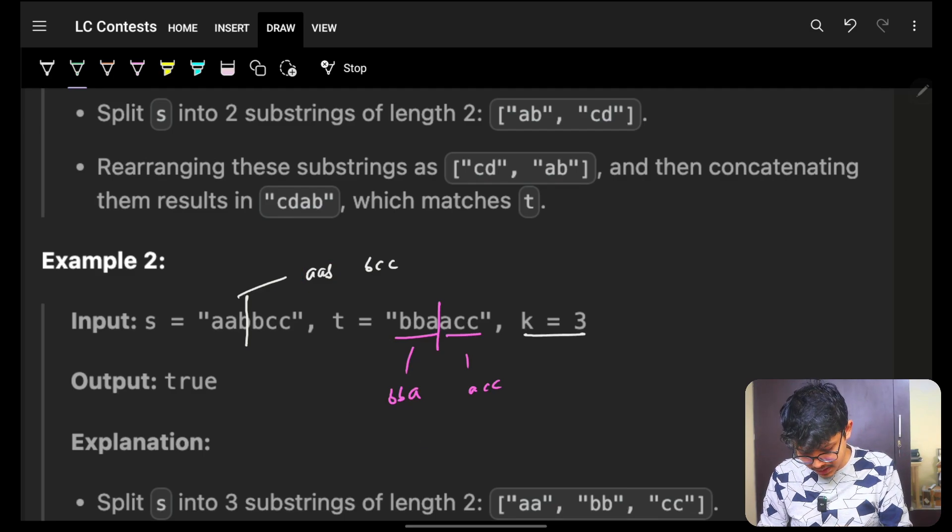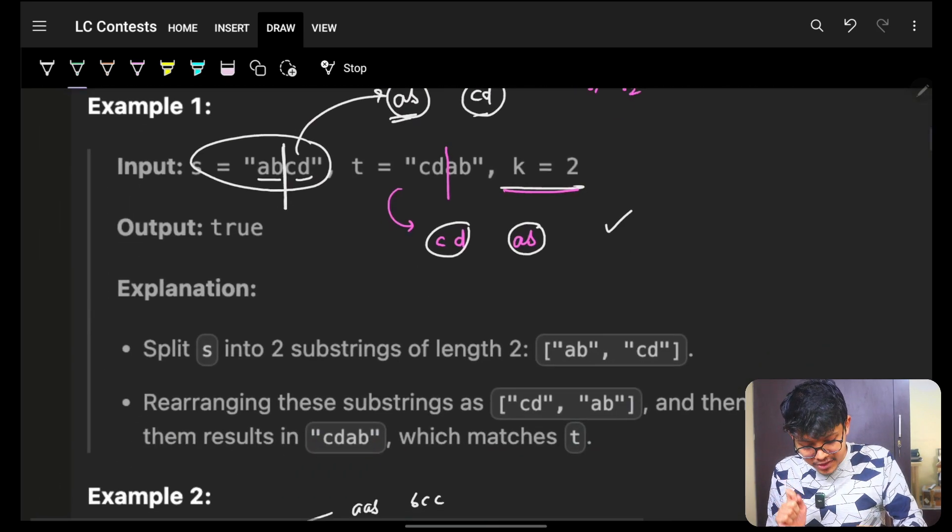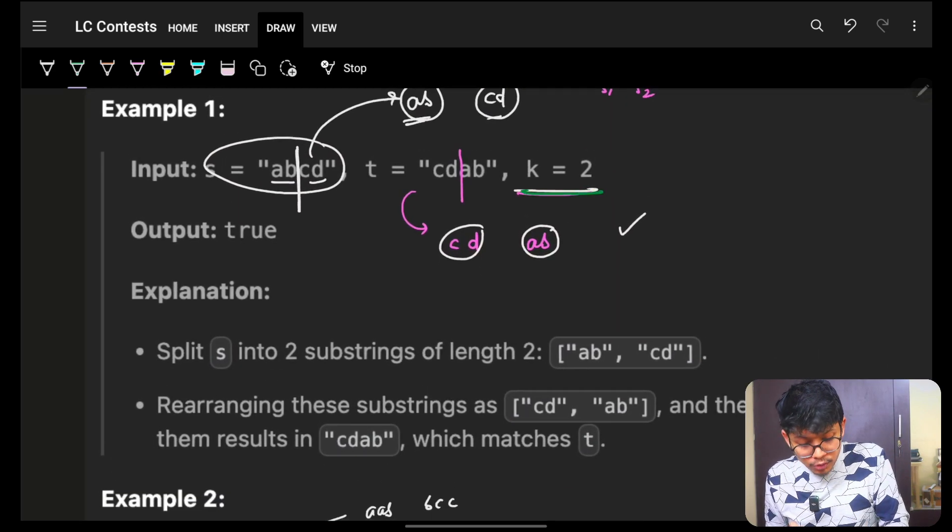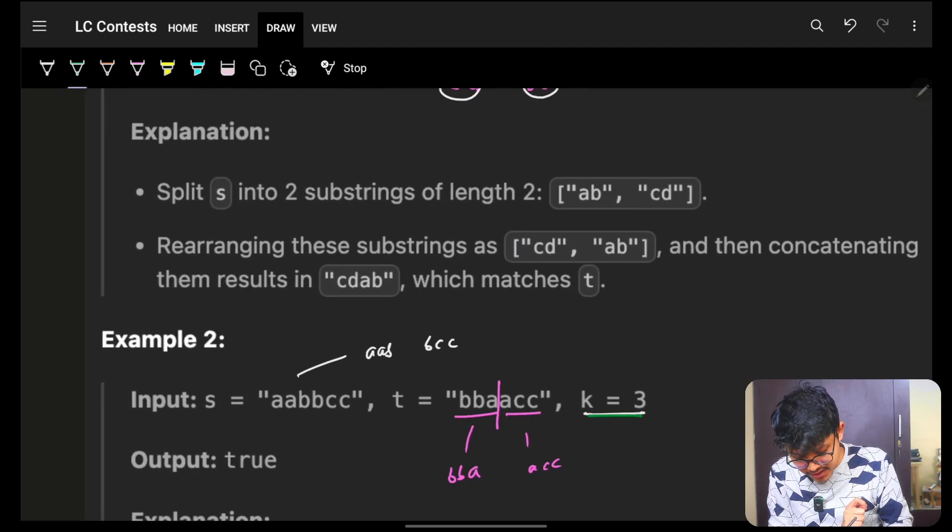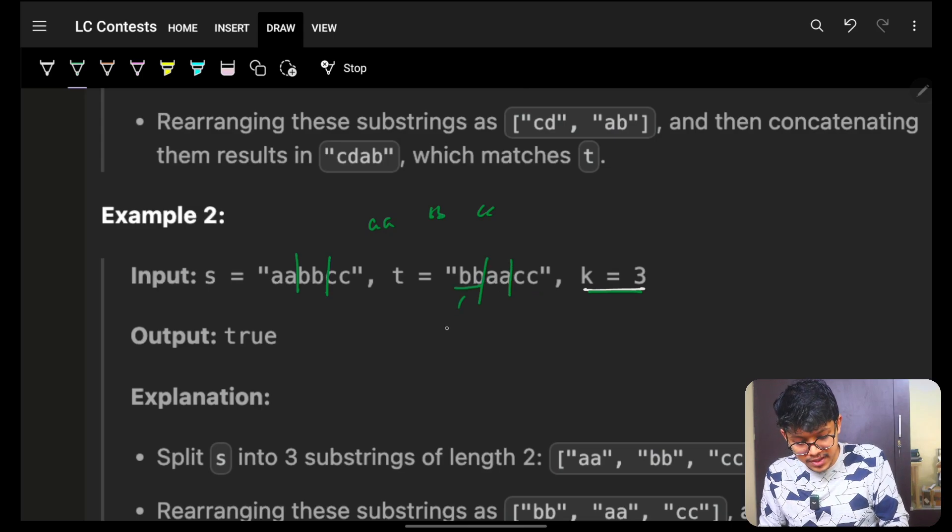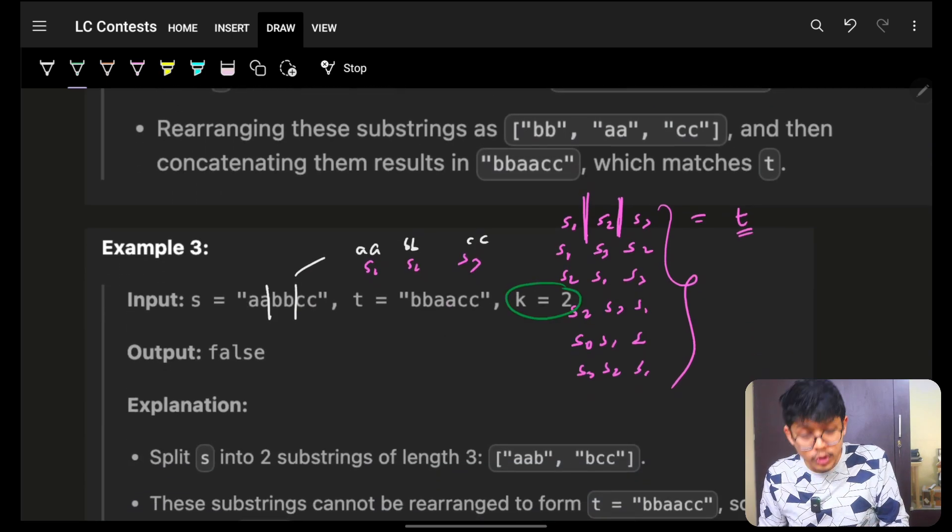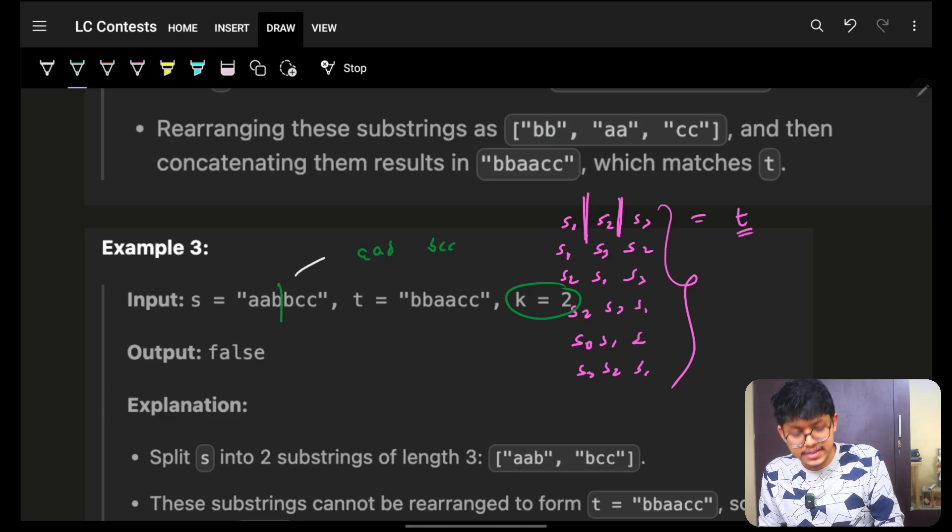Sorry, do I have aab? It is bcc. K is three. Wait a second. K is three. So it should be K equal substrings, which means I should divide it into three equal substrings. It will be aabb and cc, right? And same way, I will get it as three equal substrings, bb, aa and cc. Same way, here I have divided two equal substrings, which means it should be aab and bcc. Same way, I will divide it here. It will be bba and acc.